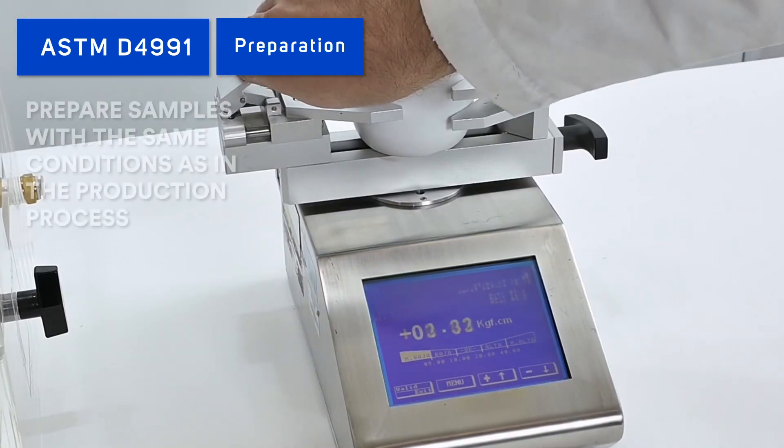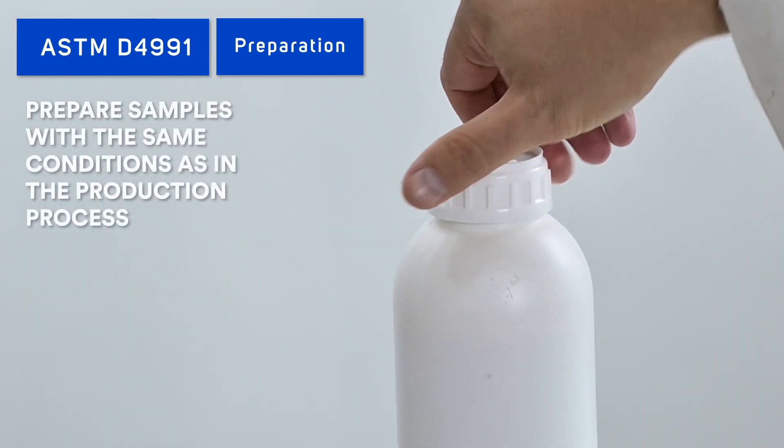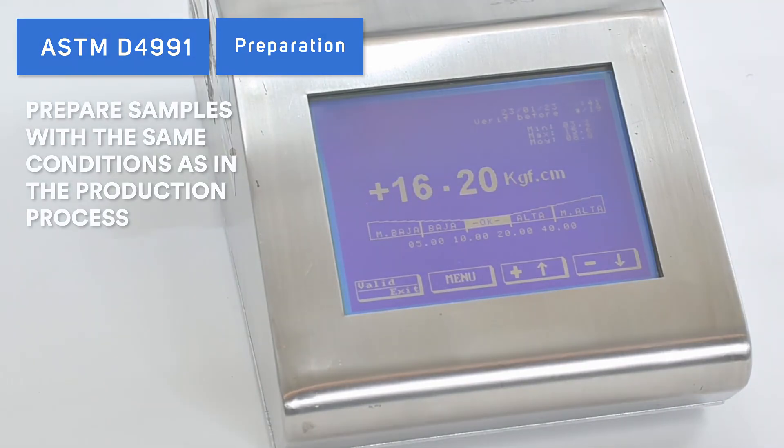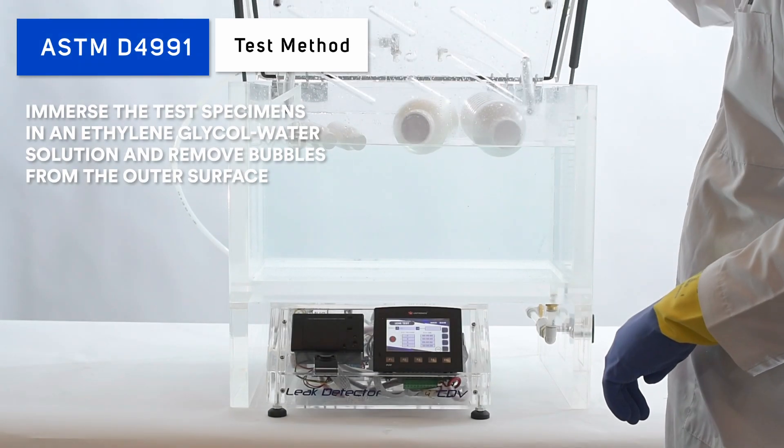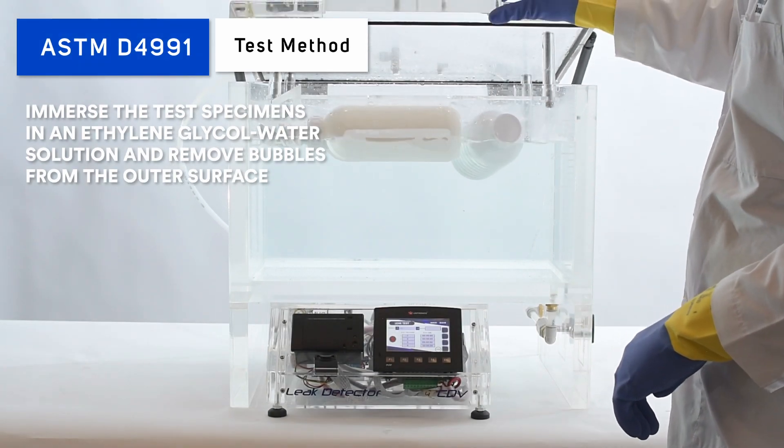Empty samples have to be prepared with the same conditions as the production process. Immerse the test specimens in an ethylene glycol water solution and remove any bubbles from the outer surface. At least three products have to be tested at the same time.